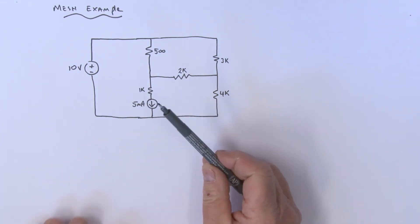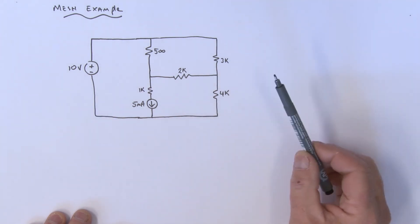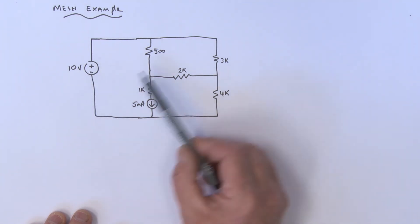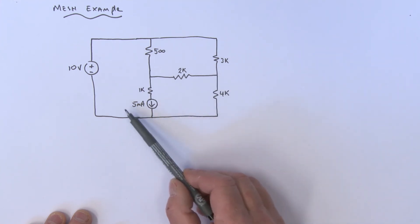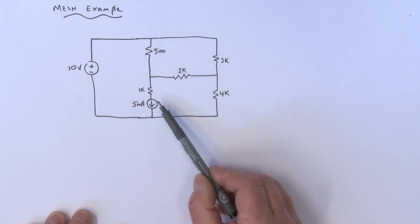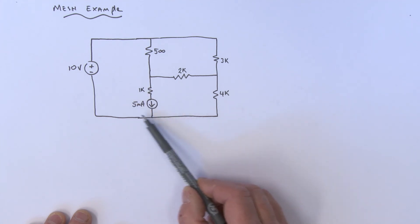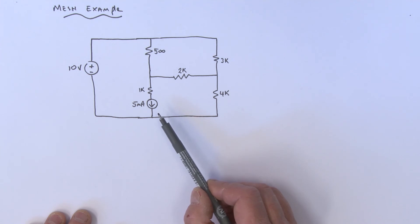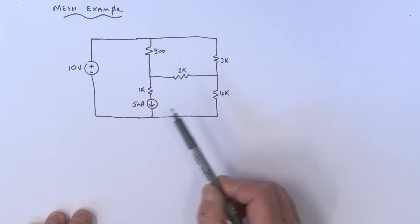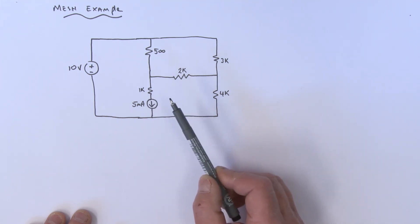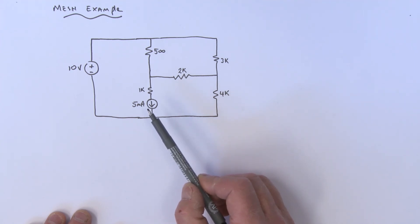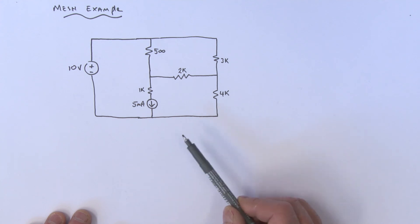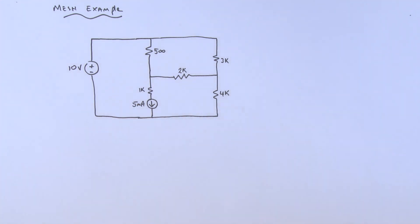Have a look at this next example. We've got a 10 volt source here, our resistors, but in this case we have a current source of 5 milliamps. What I suggest you do is take a little break and see if you can write down the mesh currents for this particular circuit, and then when you're ready, come on back and we'll work this problem together.